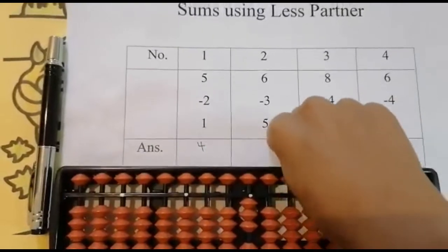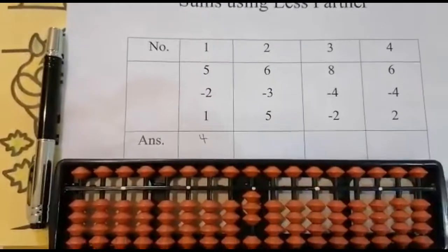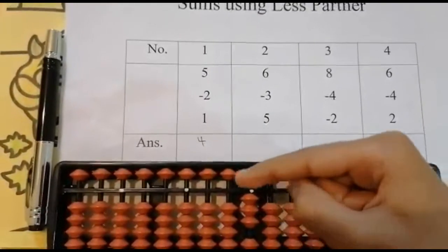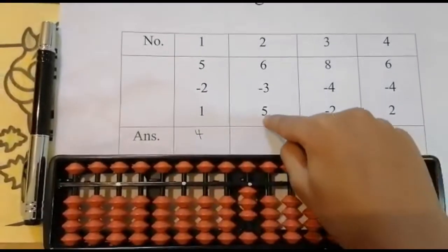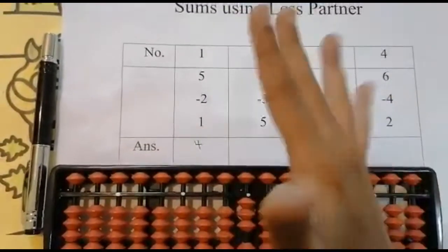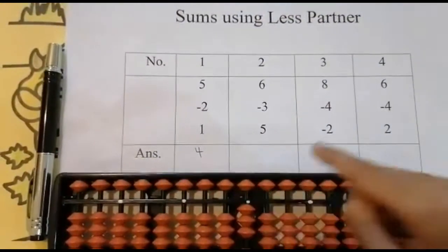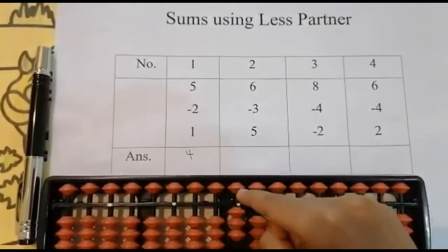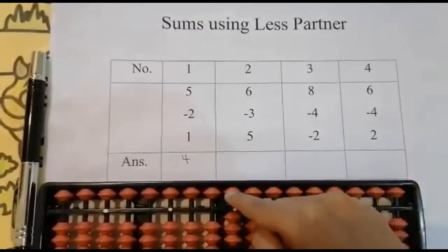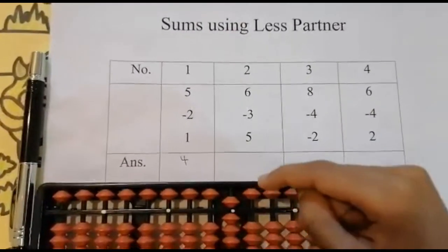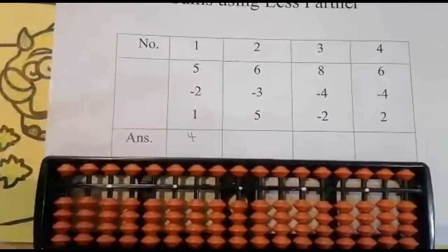The last number is five. Can I add five? No, I cannot, because here is only one value and I need to add five values — not possible. Now use your four finger, go to the upper bead — is it enough? Yes, it has the value five. Use your four finger, add five. Got eight. Set zero and the answer is eight.